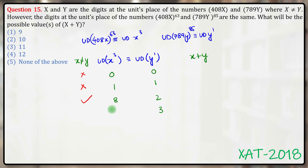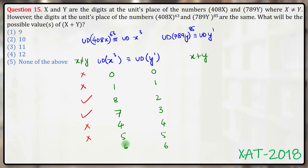If y is 5, 5³ = 125 ends in 5, so x equals y — unacceptable. If y is 6, 6³ = 216 ends in 6 — unacceptable. If y is 7, 3³ = 27 ends in 7, so this case is acceptable. If y is 8, 2³ = 8 ends in 8, so this case is acceptable. If y is 9, 9³ = 729 ends in 9, so x equals y — unacceptable. All cases of y have now been exhausted.